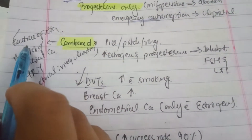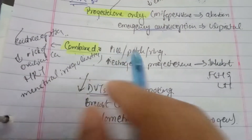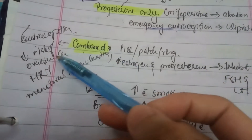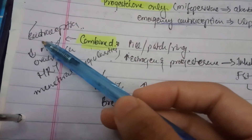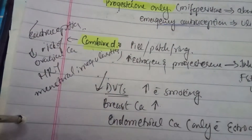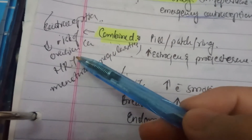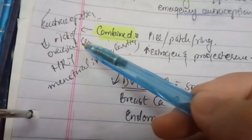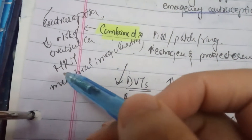Combined pills contain both estrogen and progesterone, available in pill, patch, and ring forms. Their clinical uses include contraception and decreasing the risk of ovarian cancer — the more repetitive the cycles are suppressed, the lower the ovarian cancer risk. They are also used in HRT and for menstrual irregularities.